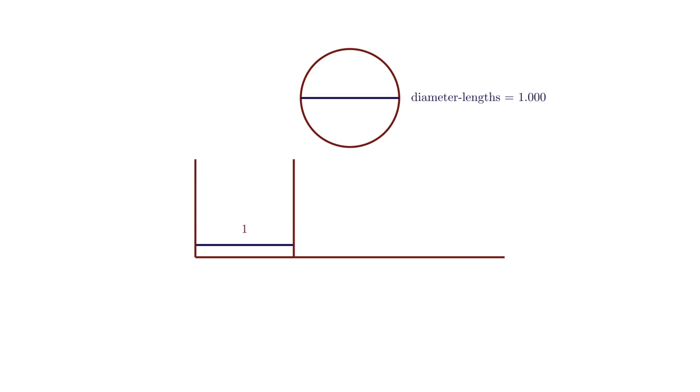We already have one diameter length. If we draw another vertical line and draw another horizontal line with the same length as diameter, we have two diameter lengths. If we repeat the same process, we have three diameter lengths.